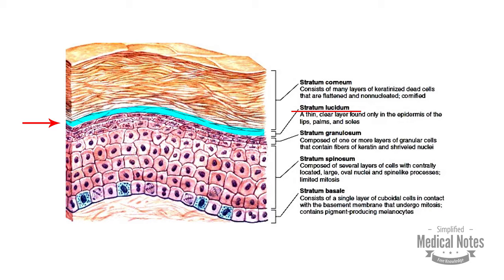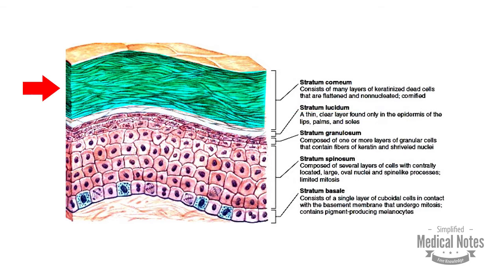Stratum lucidum is a transparent layer packed with dead cells. This layer is found only in areas of thick skin, such as the palm, sole, and fingertips.